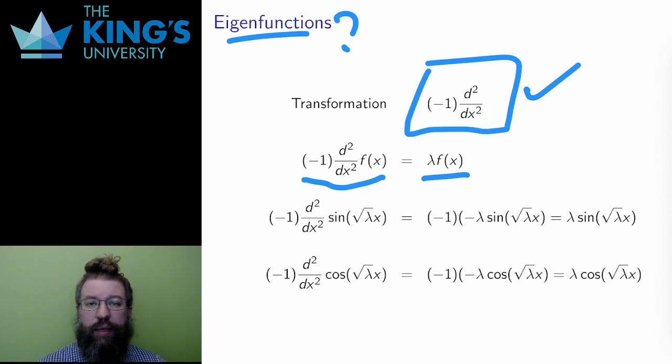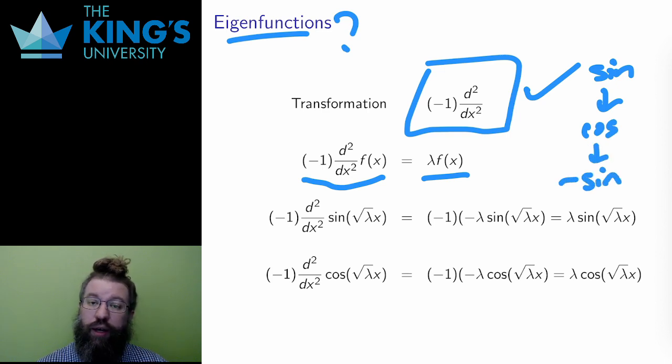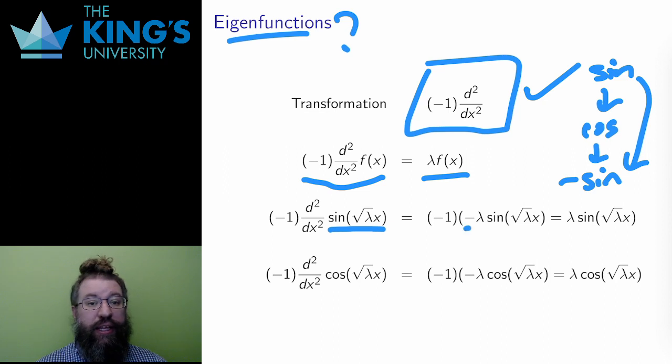Thinking back to my derivative patterns in calculus, the derivative of sine is cosine, and the derivative of cosine is negative sine. So two derivatives of sine are negative sine. Maybe this will work. And in fact, it does. The eigenfunction here is sin(√λ x). If I differentiate this twice, I get negative sine, but each of the two derivatives needs a chain rule, and each time the derivative of the inside is √λ, so I get √λ multiplied by this twice, which is just λ. Then, cancelling off the negative shows that the result is λ times sin(√λ x). This is an eigenfunction.